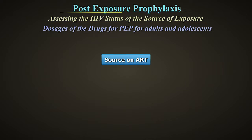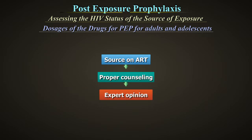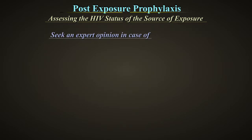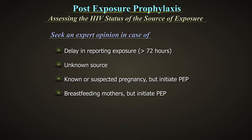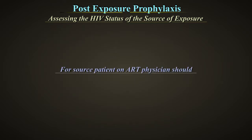If the source is already on ART, start the exposed person with the above-mentioned regimen at the earliest with proper counselling and then refer for expert opinion. Seek expert opinion in cases of: delay in reporting exposure more than 72 hours, unknown source, known or suspected pregnancy (but initiate PEP), breastfeeding mothers (but initiate PEP), source patient on ARTs, or major toxicity of PEP.